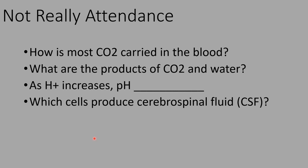How is most CO2 carried in the blood? From our previous lecture, CO2 goes several different paths, but two of those paths result in the bicarbonate ion — one goes through the erythrocyte and one goes into the plasma. Regardless of which path, it meets with water to form carbonic acid, which dissociates into H+ and the bicarbonate ion. The bicarbonate ion then moves out into the plasma, so most CO2 is carried in the plasma as the bicarbonate ion.